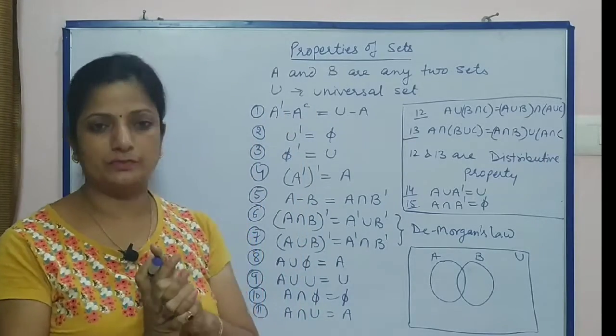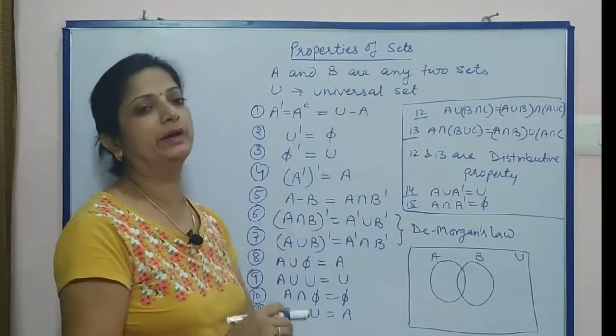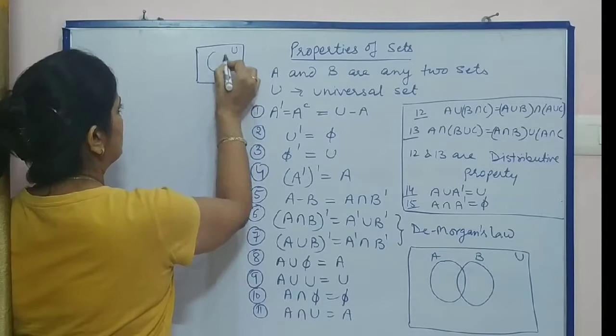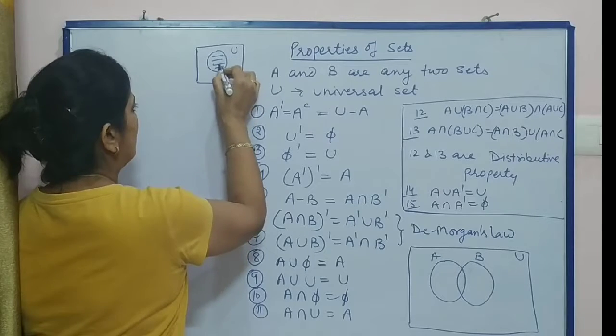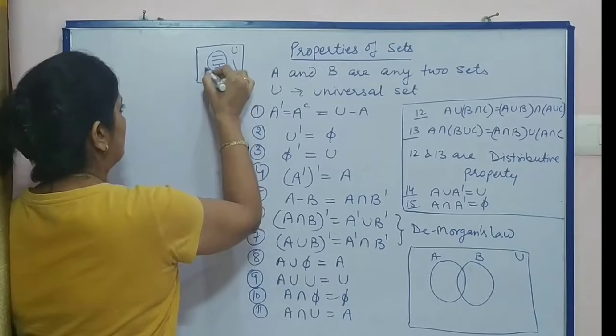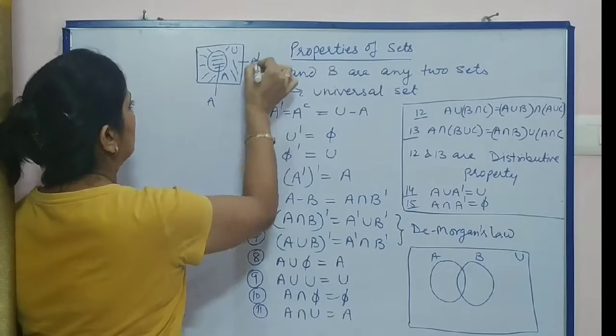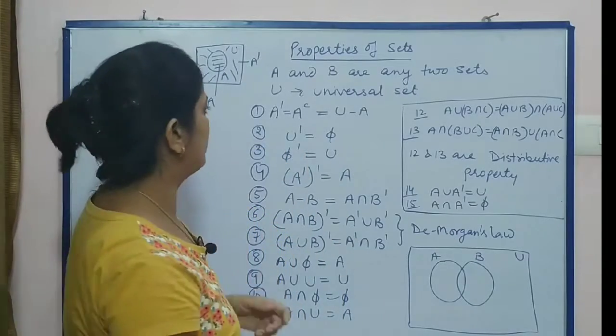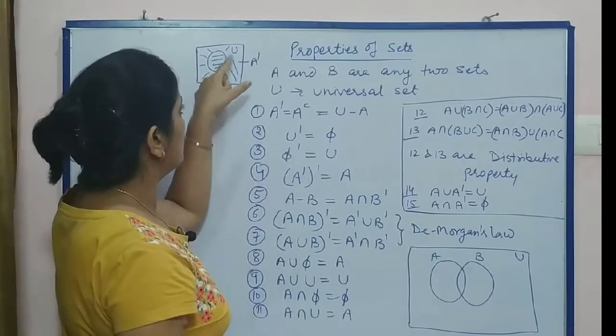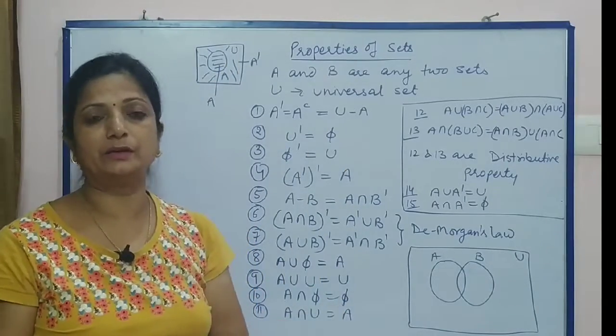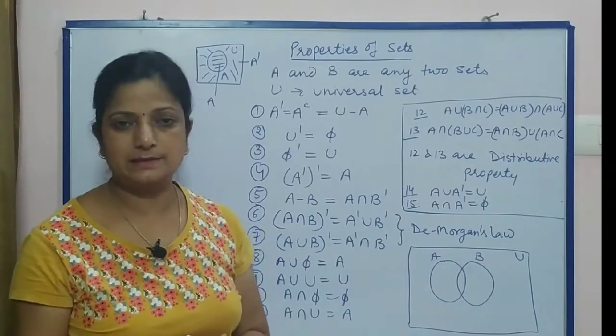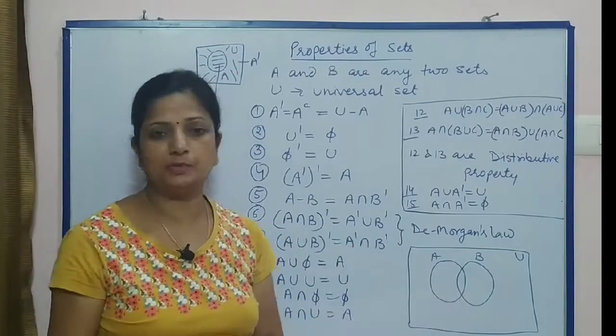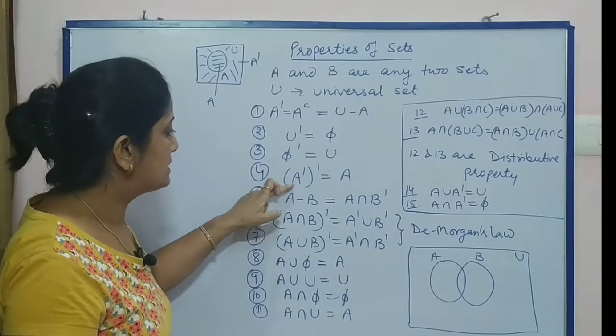represent the complement of set A, and the value of complement is U minus A. Suppose we draw a Venn diagram - this is the universal set, this is set A. This portion is set A and this outer portion within U represents A dash. That means when you remove A from U, you get A dash. In the same way, U dash (universal complement) means universal minus universal, which equals the null set or empty set. Empty dash (complement of empty) means you haven't removed anything from U, so it equals the complete universal set U.